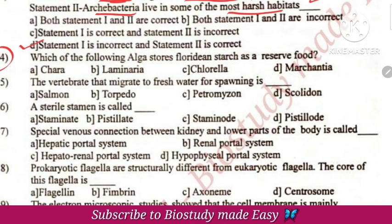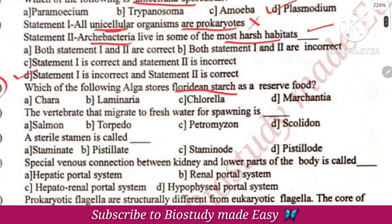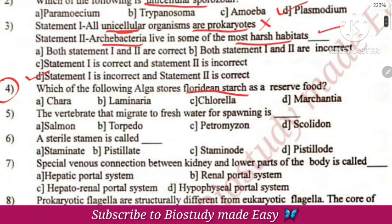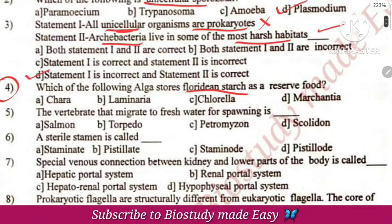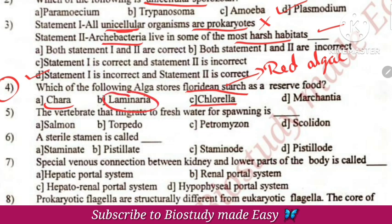Which of the following alga stores Floridian starch as reserve food? Floridian starch is a storage material found in red algae. Chara and Chlorella are green algae. Laminaria is brown alga. So red alga stores Floridian starch.